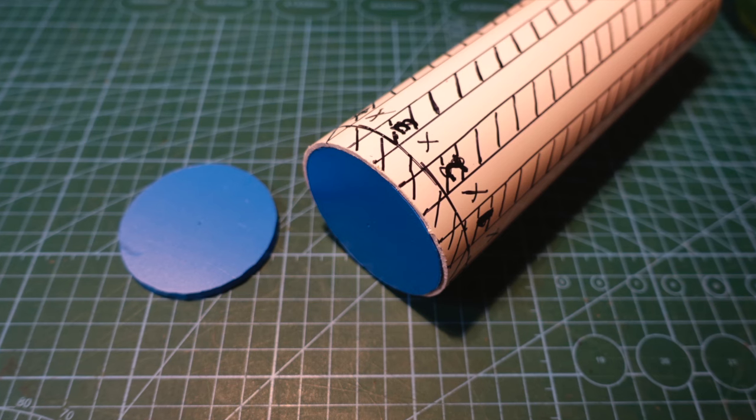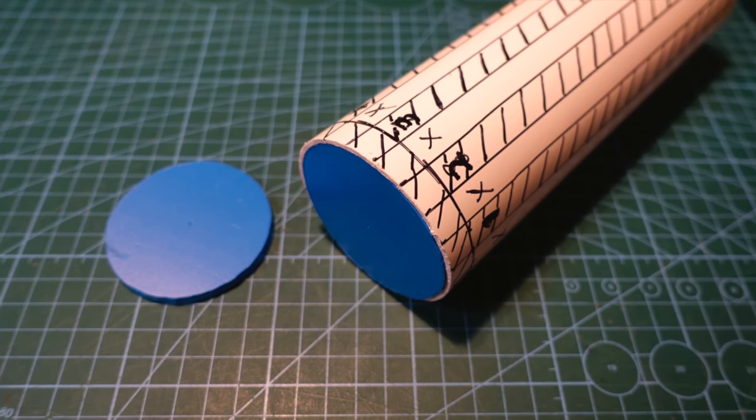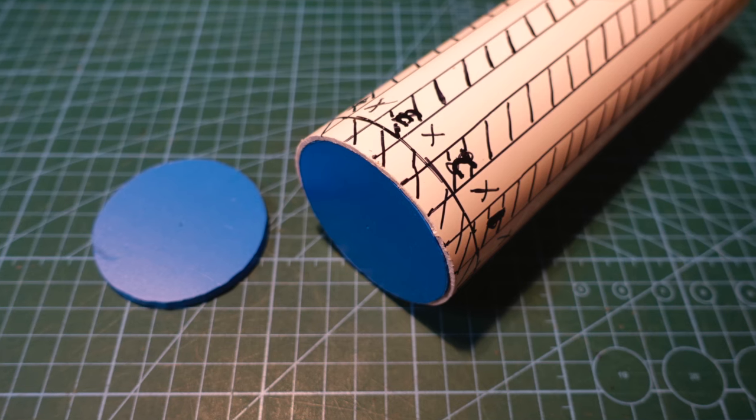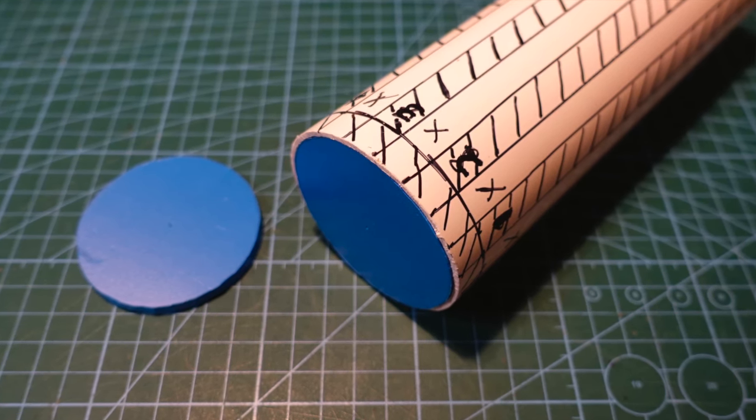I had already, with a Stanley knife, cut two end caps from the blue PVC foam board to allow me to mount the Leibniz wheel on an axle and these were fitted tightly into each end of the drain pipe.